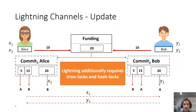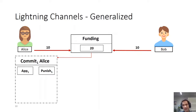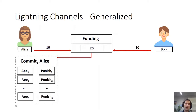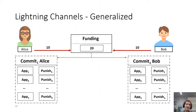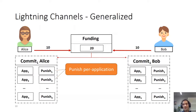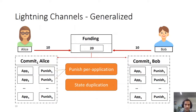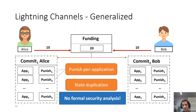This concept can be generalized to allow the payout to be some application run on the blockchain, so the scripting language supported by the blockchain can also be supported off-chain. We can run many applications off-chain in just one commit transaction. However, this is a naive generalization with problems: first, we have punishment per application, which I'll explain is inefficient; second, we have state duplication, which for nested applications would be quite problematic. This generalization is not formally analyzed, but it shows lightning can be generalized—we must do better to be efficient.